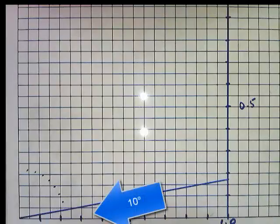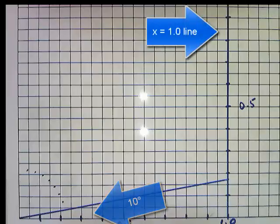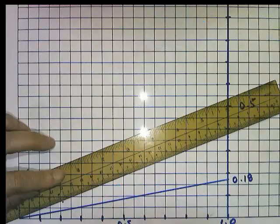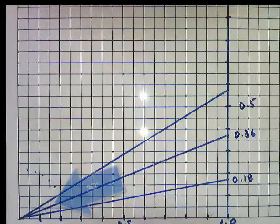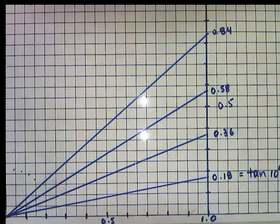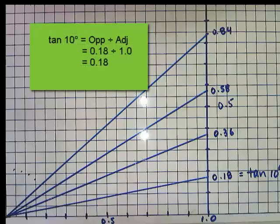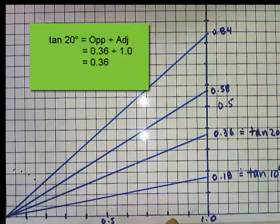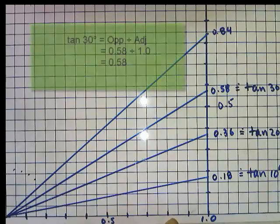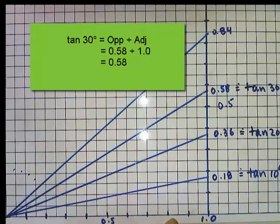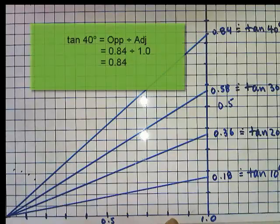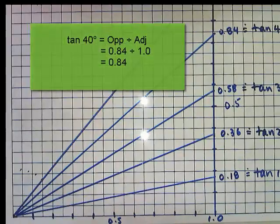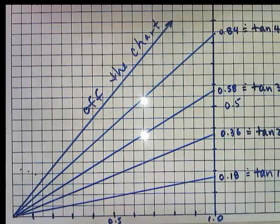Now I'm going to draw an angle, 10 degrees, until it hits the x equals 1.0 line. I'm repeating for 20 degrees, 30 degrees, 40 degrees, and so on. Now the tangent of 10 degrees will be 0.18 over 1, the tangent of 20 degrees is 0.36 over 1, the tangent of 30 degrees is 0.58 over 1, and the tangent of 40 degrees is 0.84. The tangent of 50 degrees is off the chart.